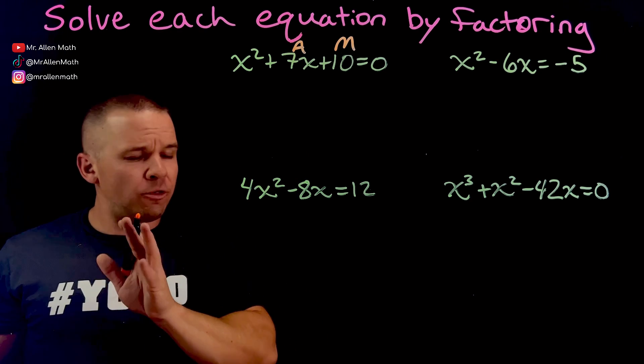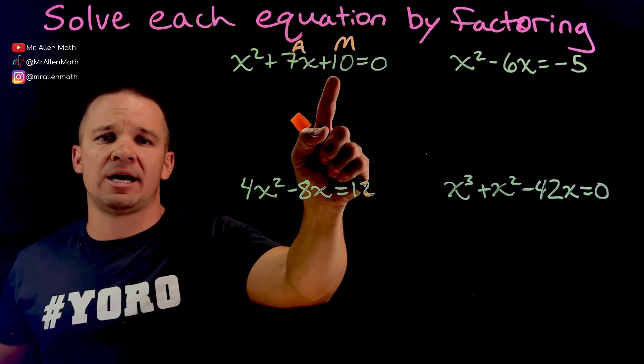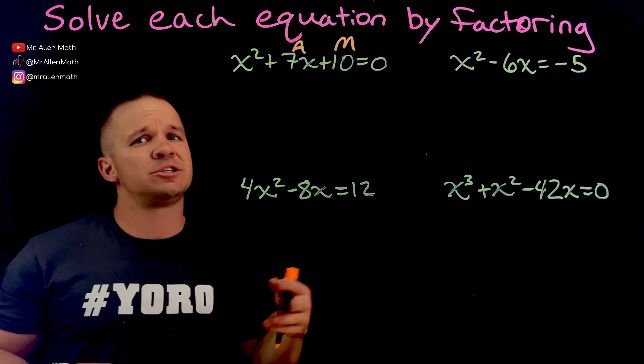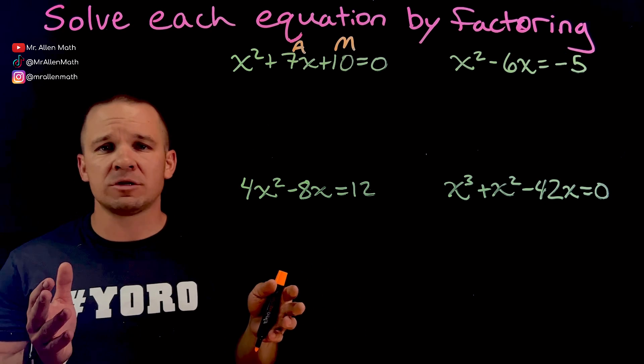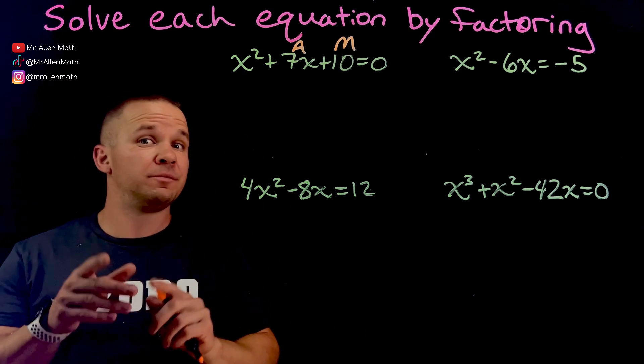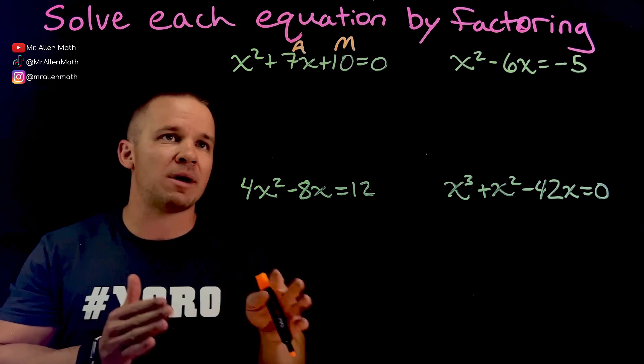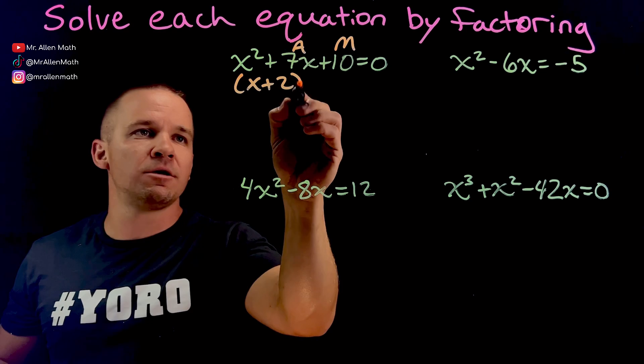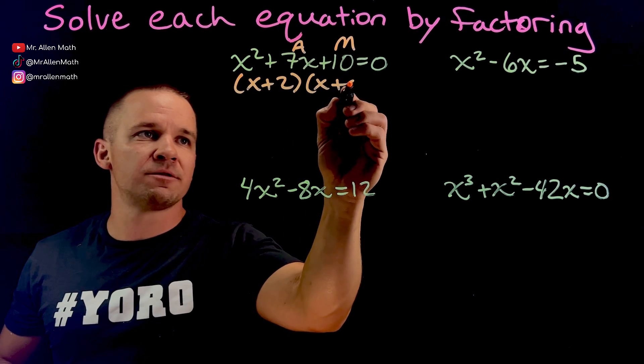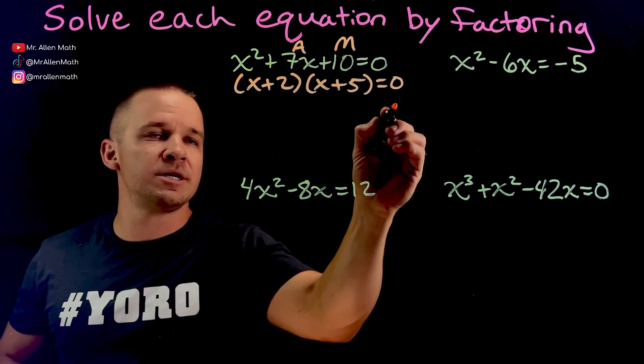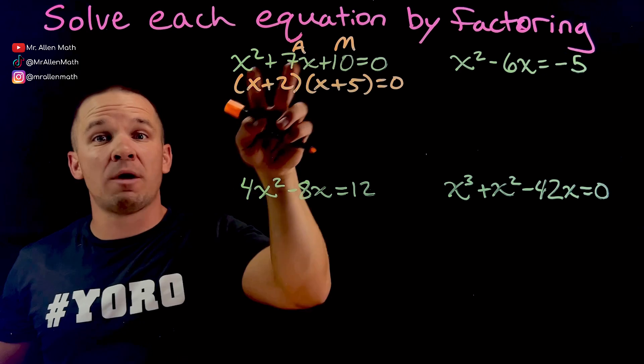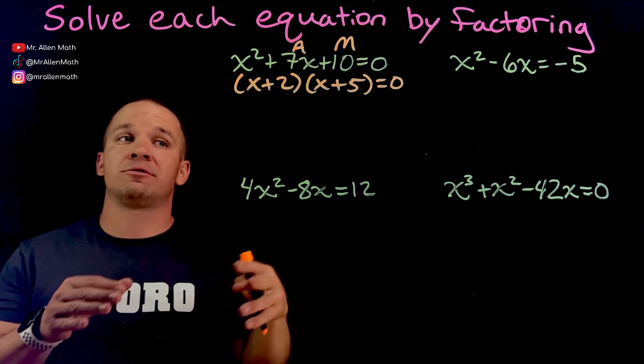What two numbers would do that? Well, the first thing we want to do is think about what multiplies to 10. I got 1 and 10. I got 2 and 5. Do either of those pairs add up to 7? Yes, the 2 and the 5 do. So those are the two numbers I'm going to use in my factors. I'm going to have X plus 2 and X plus 5 equals 0. This right here is equivalent to the green part up there. It's in factored form.